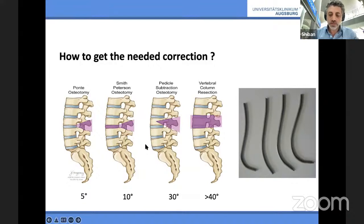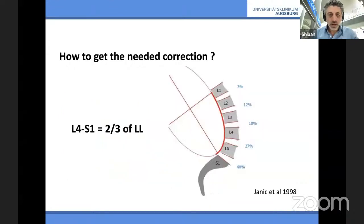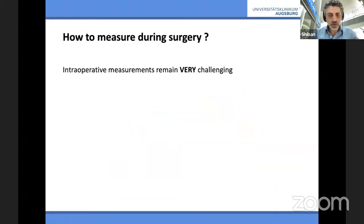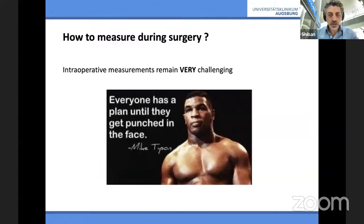You can also combine more than one osteotomy type and more than one level to get your optimal correction degree. At the end of surgery, you will bend the rod with your hand and try to put the patient into your bent rod. The second rule of thumb is that two-thirds of the lumbar lordosis should be at the lower parts between L4 and S1. How to measure during surgery is very difficult — the patient is prone and decompressed.